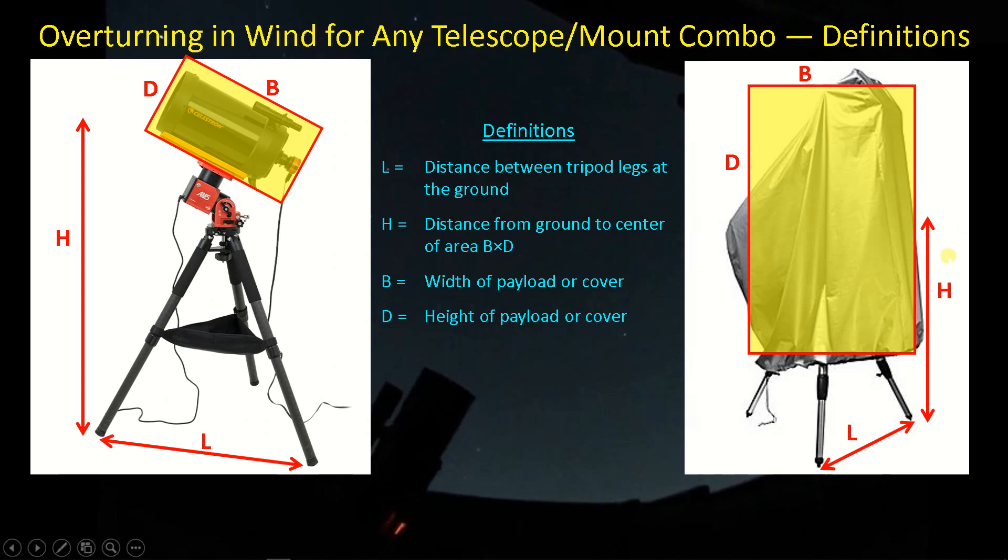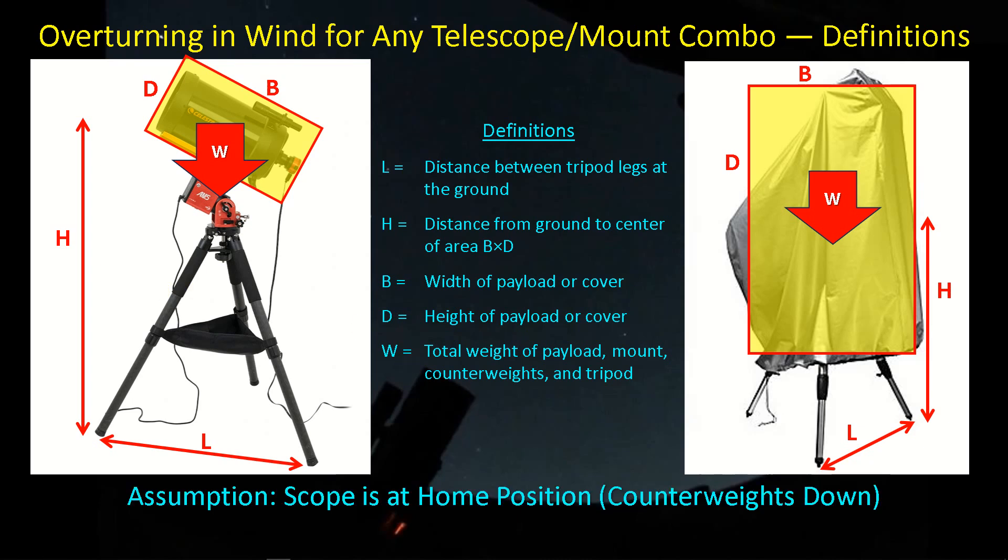Now we have the area that we're talking about. This is the area that's going to be the dominant place where the wind is applying a force. But reacting against that wind and helping to stabilize our setup is the weight of the setup itself. And I'm talking about here is the total weight. We've got the payload. We've got the mount. We've got the tripod. And of course, you may have counterweights added onto the bottom of your mount. Now let's go over and take a look at the equation that we can use to predict what wind speed will cause either of these setups to tip over. And keep in mind that the assumption here is that the scope is at the home position counterweights down.